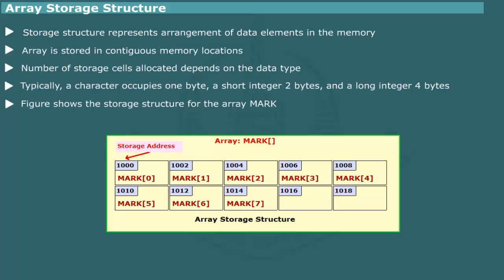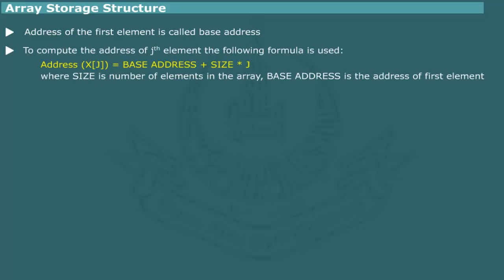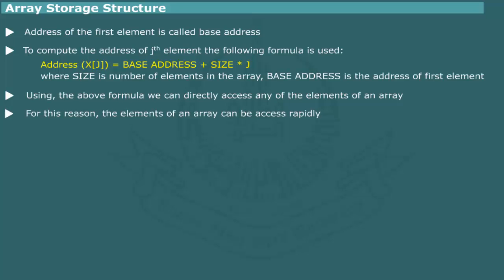The address of the first element is called base address. In this example, the base address of array mark is 1000. By knowing the base address, we can easily compute the addresses of other elements by using the general formula. Where address xj means storage address of the element xj, j being the index. Base address is the address of the first element x0 and size is the number of bytes allocated to an element. Thus, using the index, we can easily compute the address and access the element without the need for searching other elements in the array. For this reason, the elements of an array are said to have direct access.